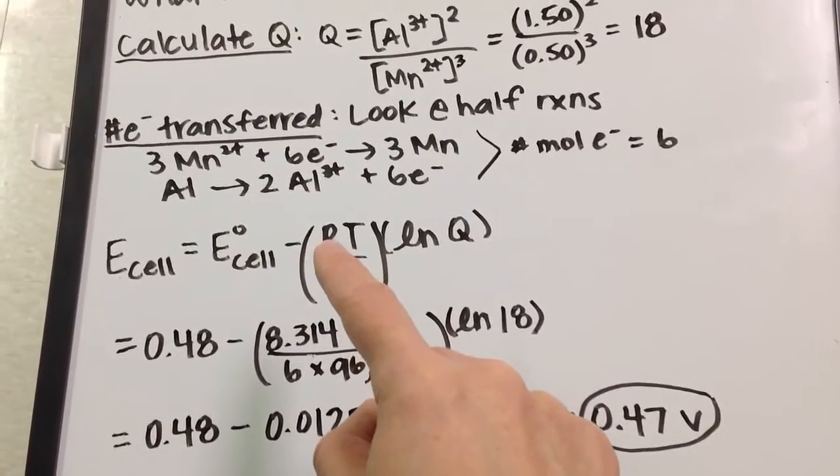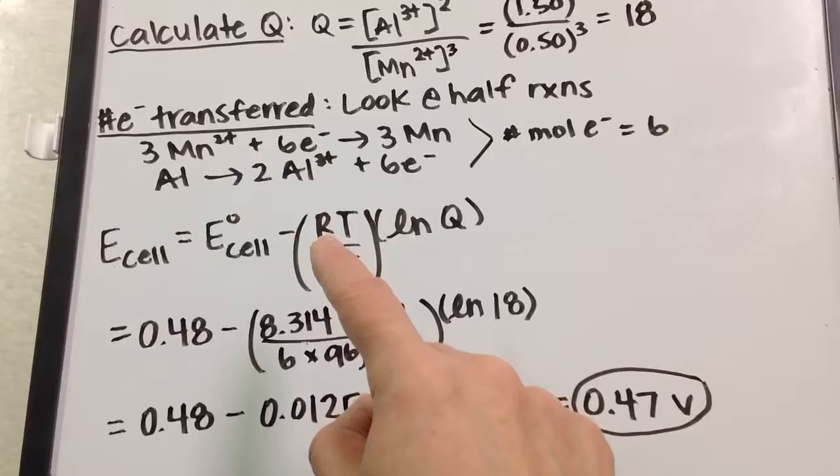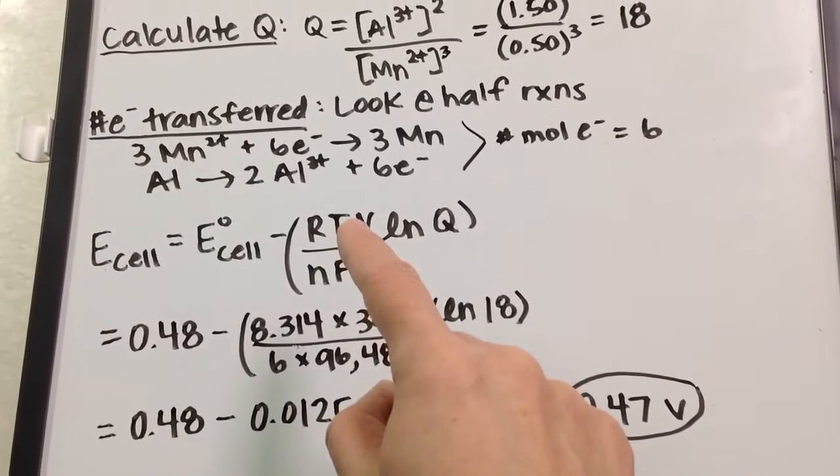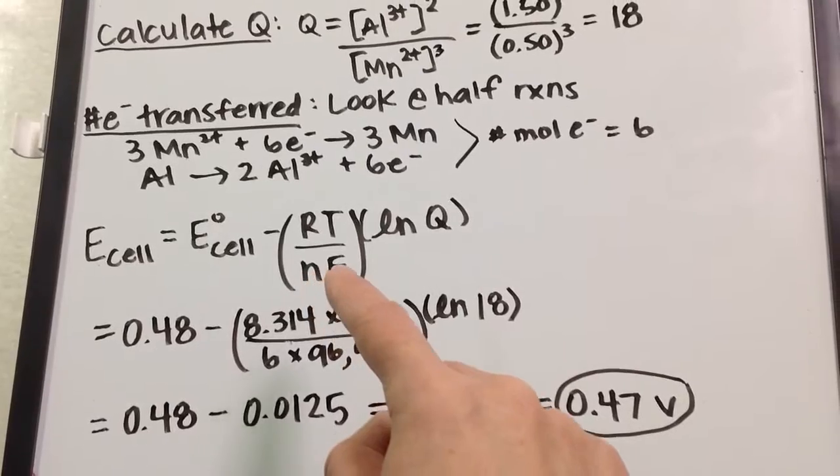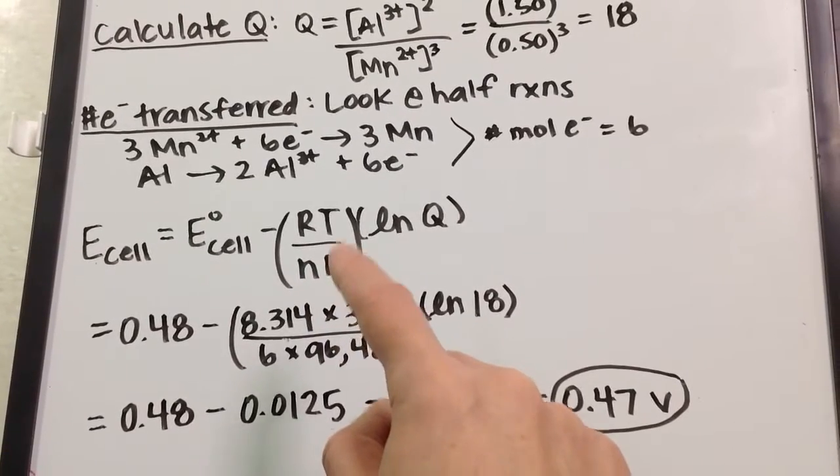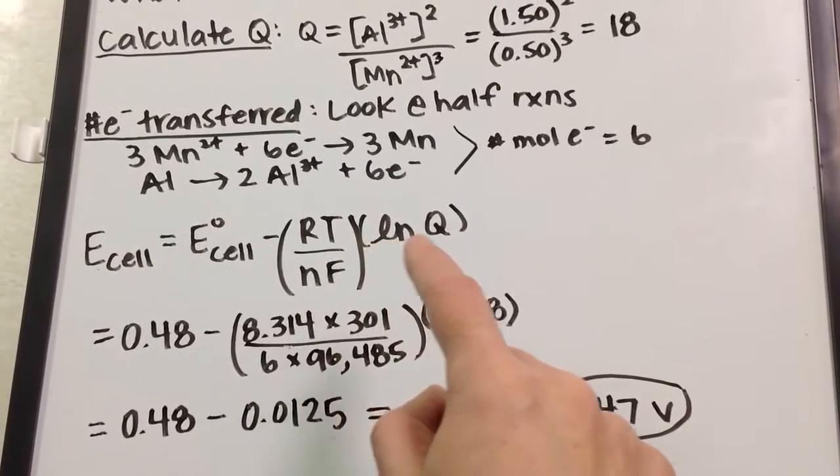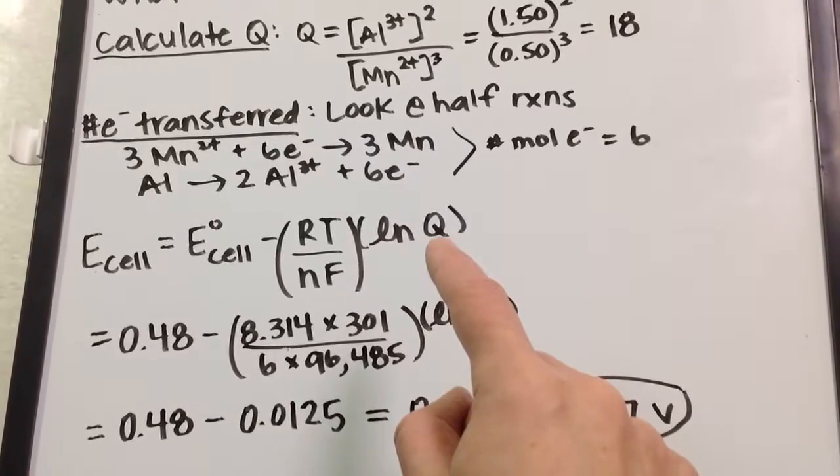there's our R value again, 8.314, there's temperature in Kelvin, divided by number of moles times Faraday's constant, all multiplied by the natural log of the reaction quotient.